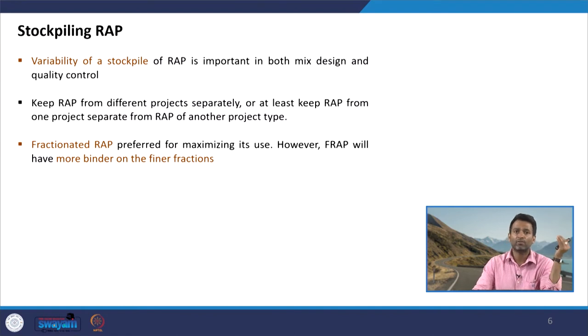Once the RAP is crushed, it is better to fractionate it into different size fractions, and more fractions are preferable to maximize its use. For example, keeping 26.5–19 mm, 19–4.75 mm, and below 4.75 mm separately. When fractionating RAP, remember that the binder goes more toward the finer material due to higher specific surface area — finer fractions will have more bitumen compared to coarser fractions.